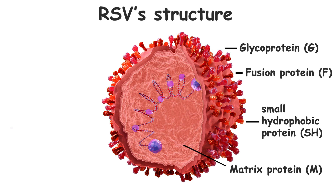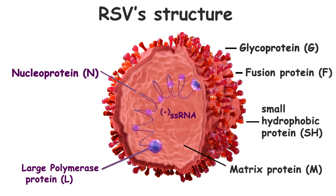Now let's turn our attention to the virus's interior. The nucleoprotein wraps around the viral RNA, forming a tight complex. This shield protects the RNA and plays a role in the replication process, ensuring the genetic material of the virus is accurately copied. The large polymerase protein orchestrates the intricate process of replicating the virus's genetic material, driving the relentless cycle of infection.